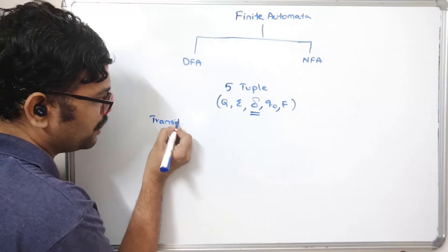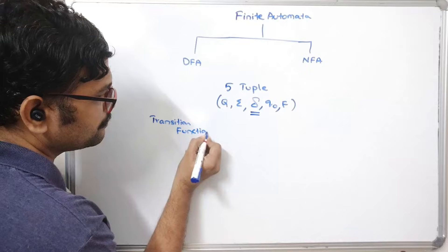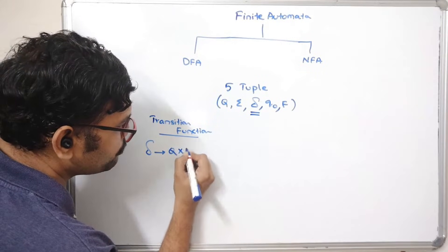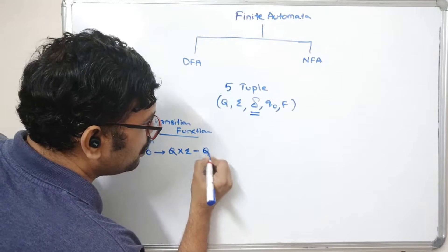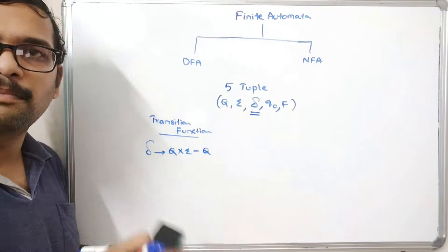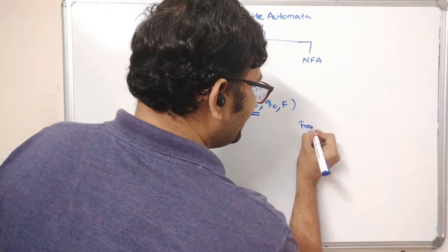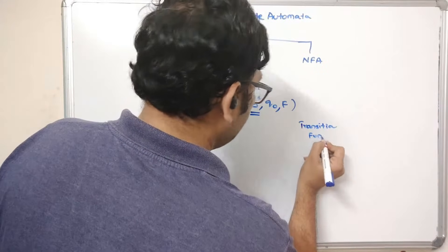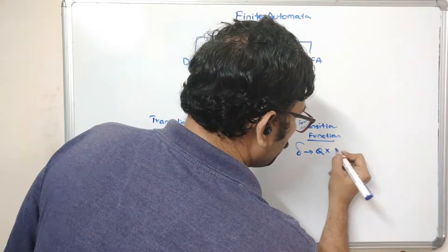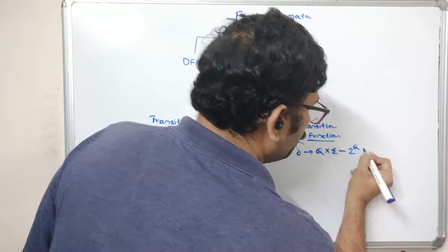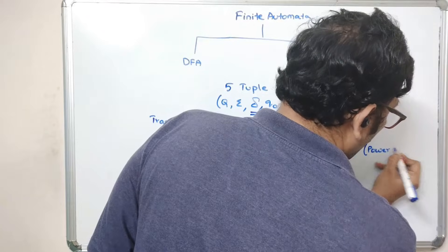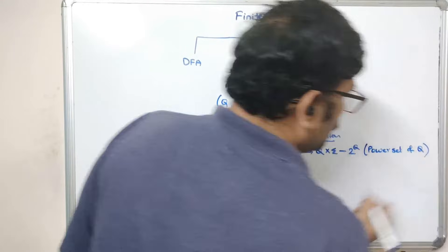The transition function for a DFA can be represented as Q cross-product sigma, which gives a result in Q itself — Q is the set of states. For an NFA, the transition function is Q cross-product sigma, but the result is in 2^Q — that means it can be anything in the power set of Q. Let me elaborate on this with an example.